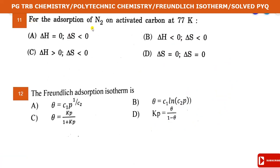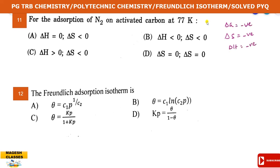For the adsorption of nitrogen on activated carbon at 77 Kelvin: for gas adsorption, delta S is negative, delta G is negative, and delta H is negative - it is an exothermic reaction. At equilibrium, delta G equals zero.